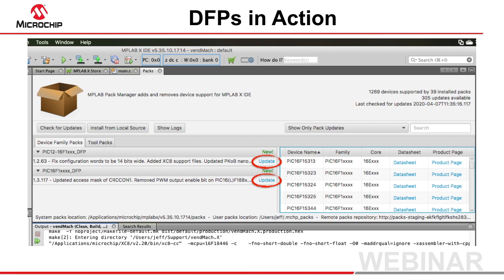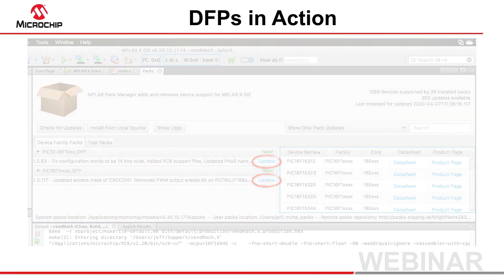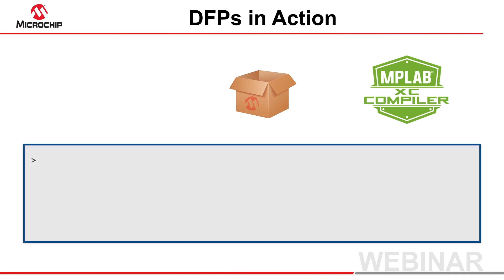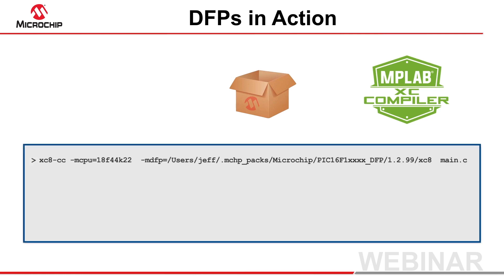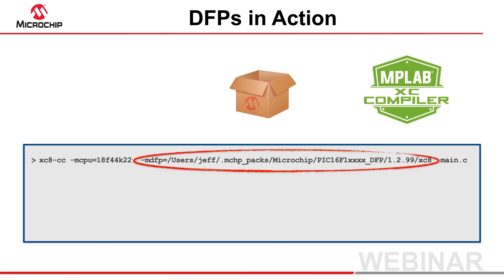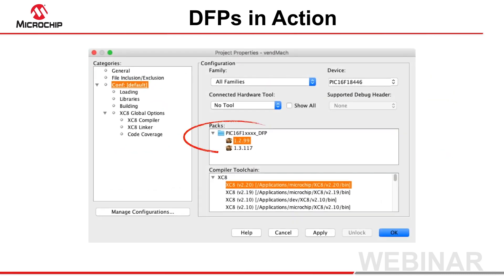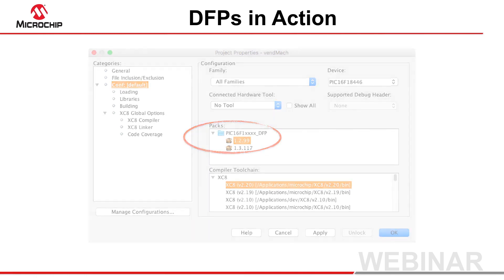Install packs by clicking the links. The compilers are distributed with the content of the latest DFPs so that they can be used stand-alone. But other or newly released DFPs can also be used when you build. The "-mdfp" command line option lets you use an alternate DFP path. Or when using the compiler from within the IDE, select the required DFP from the packs pane in the project properties dialog, and the IDE will do the rest.